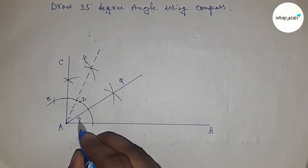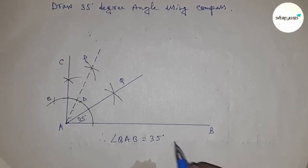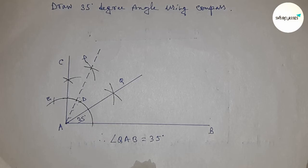Therefore, angle QAB equals 35 degrees. That's all. Thanks for watching. Please subscribe, like, and comment on my video.